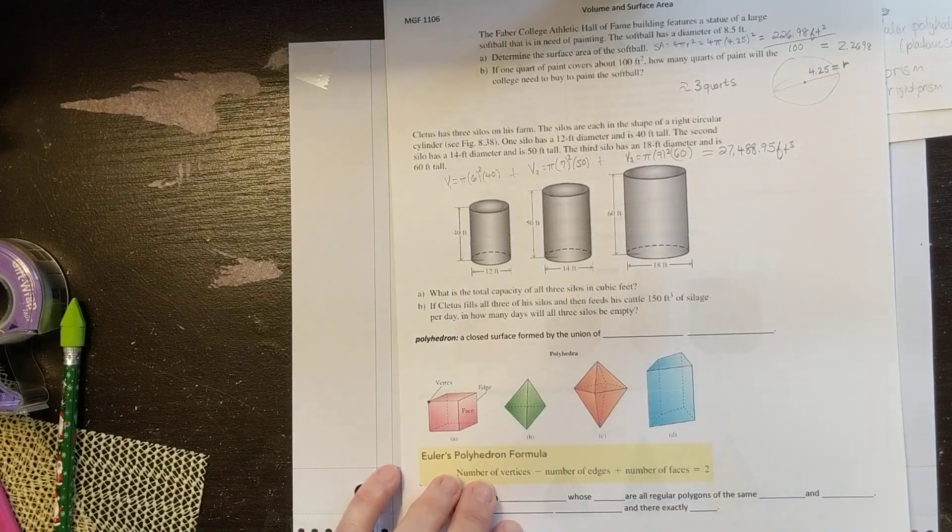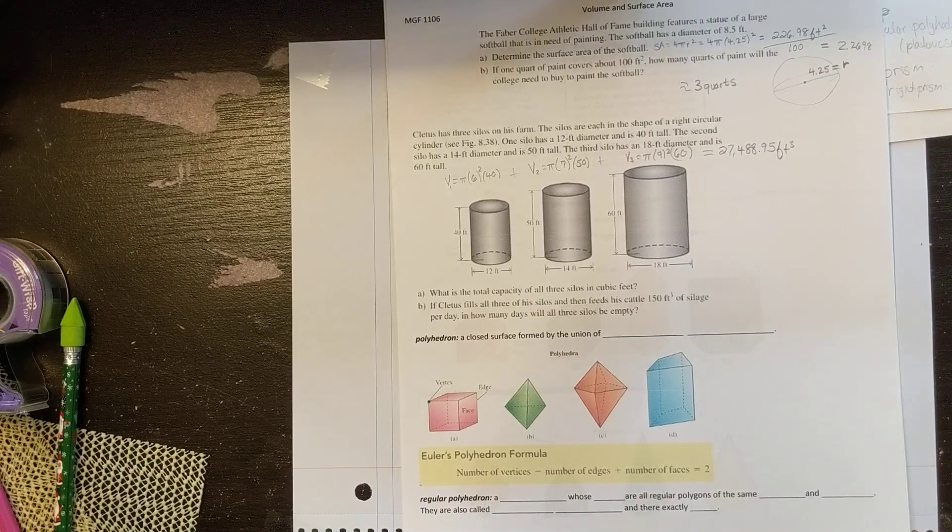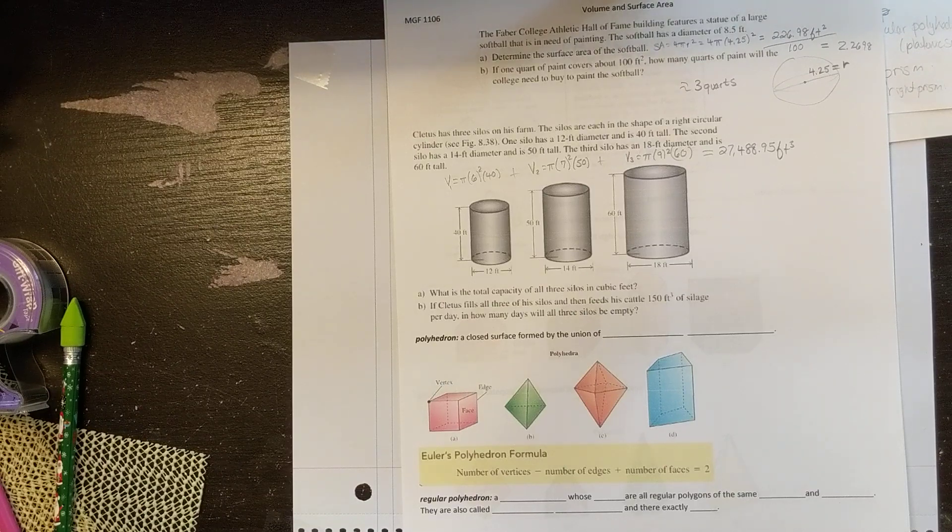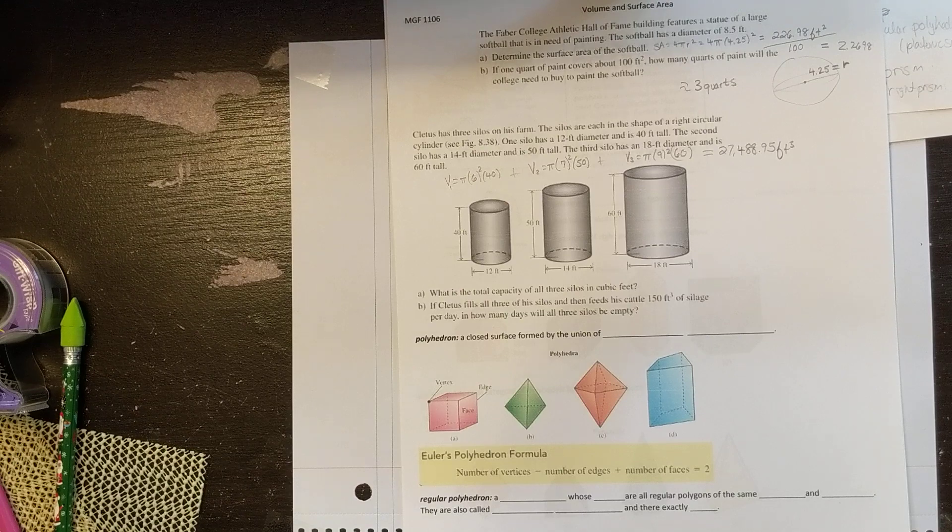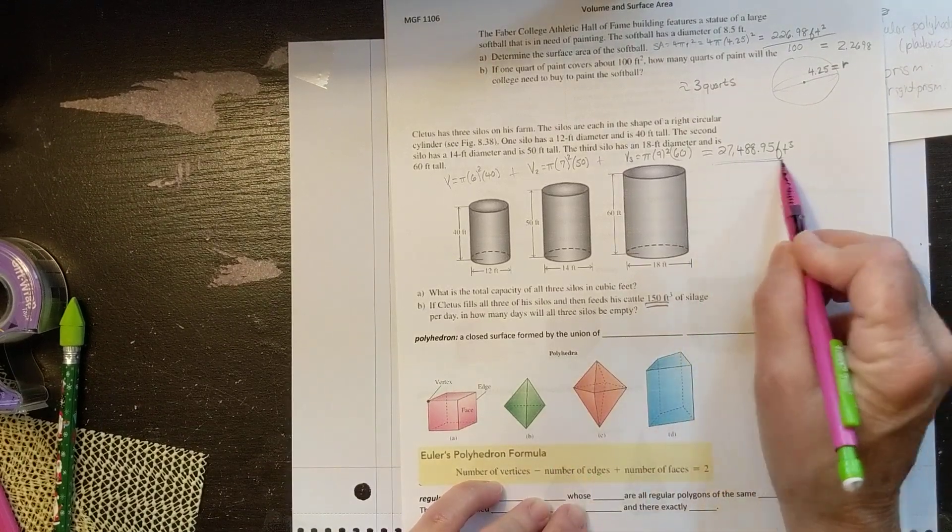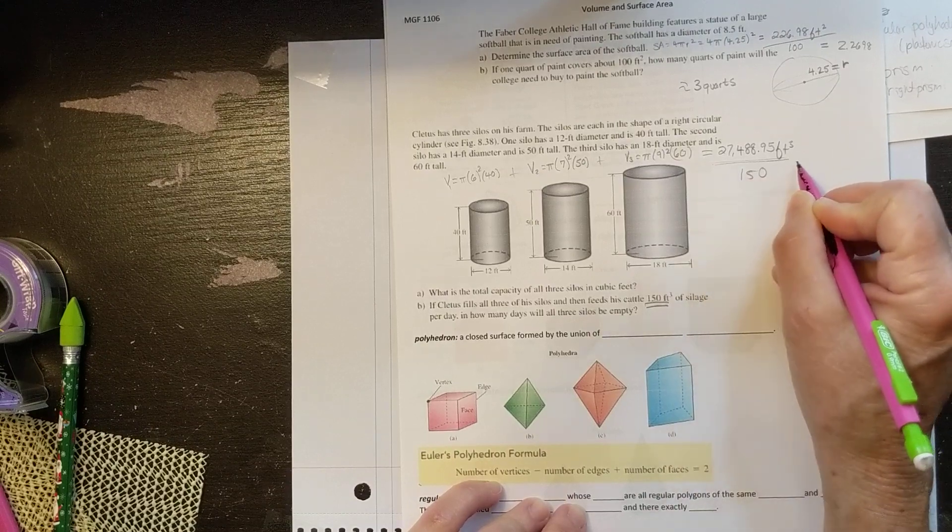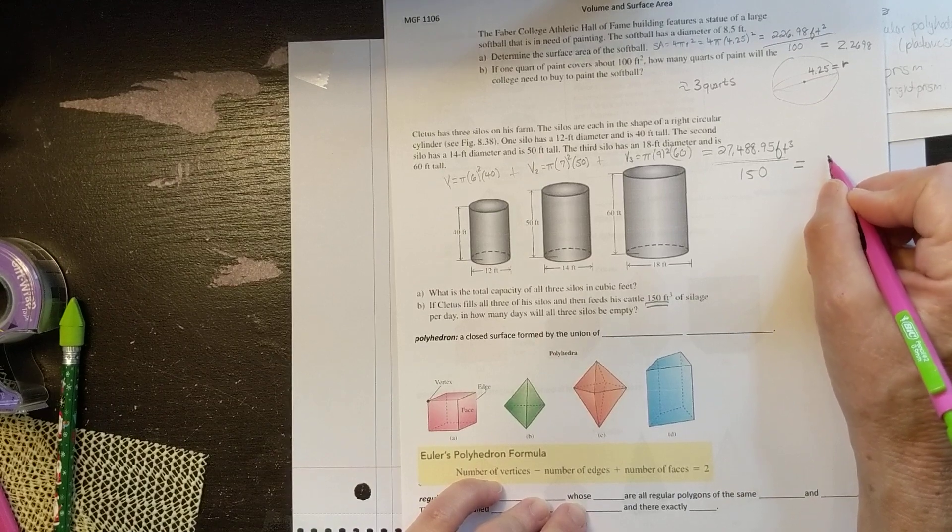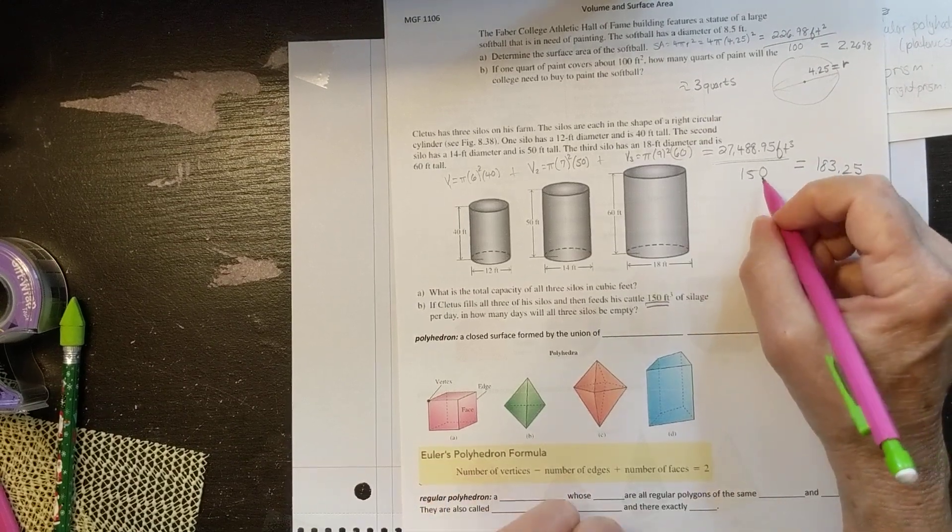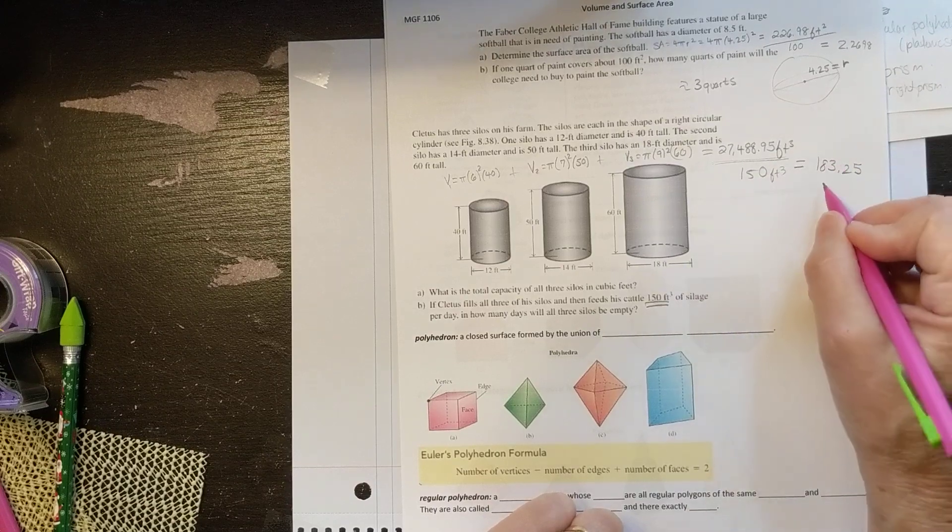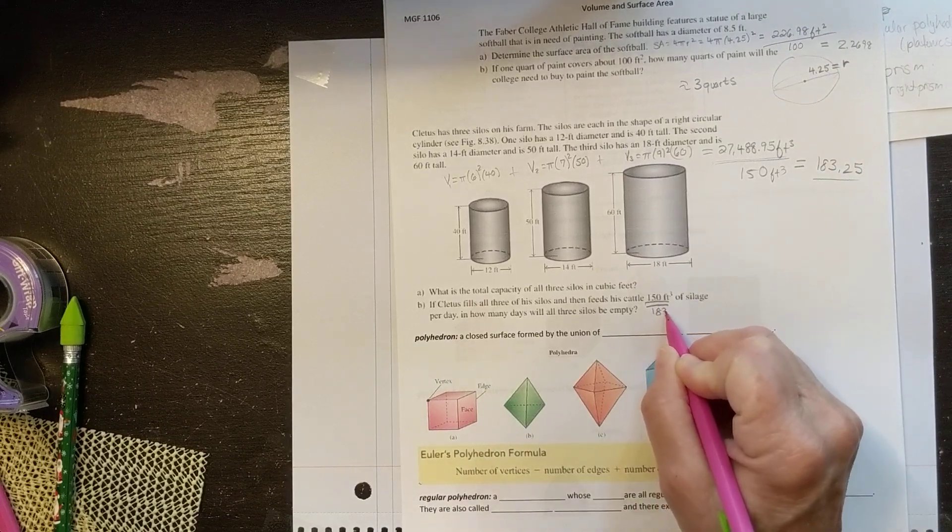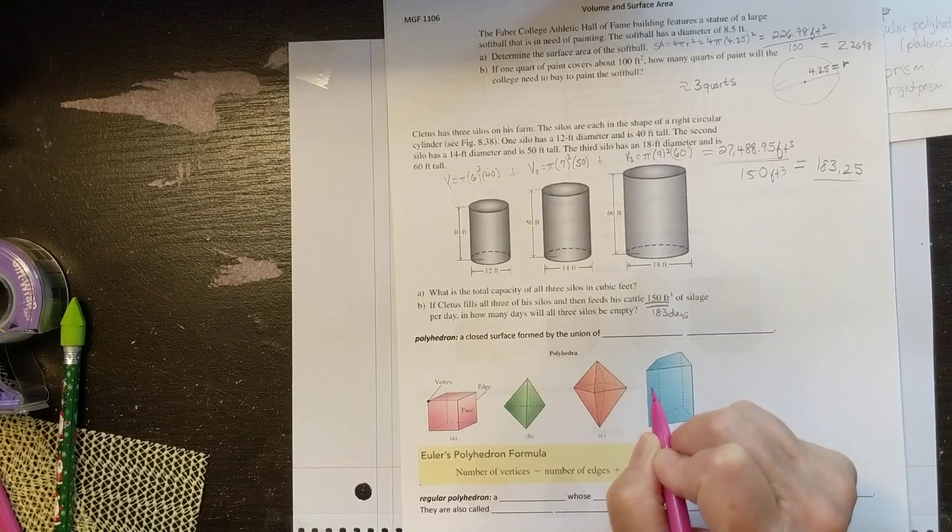That's the answer to A. Now if Cletus fills all three of his silos and then feeds his cattle 150 cubic feet of silage per day, how many days will all three be empty? He's giving them this much per day and they're filled to be this much. So we simply need to divide. If we divide this by 150, we get 183.25. So it's going to be empty after 183 days.